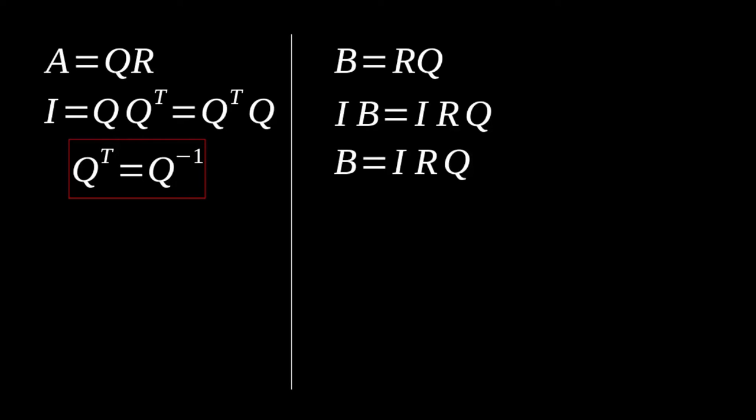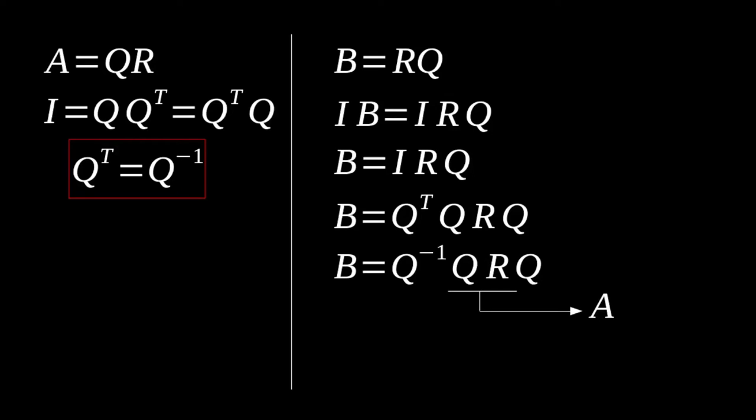But remember, our identity here from before for orthonormal matrices. The I is Q by Q transpose or Q transpose by Q. Let's substitute Q transpose by Q right in there. What you'll notice is that we have Q transpose by Q by R by Q. That's really just Q inverse by Q by R by Q. If you'll notice, we have this QR right in the middle of these four matrices. The product of that is our A matrix, and so we can just substitute that in right there.